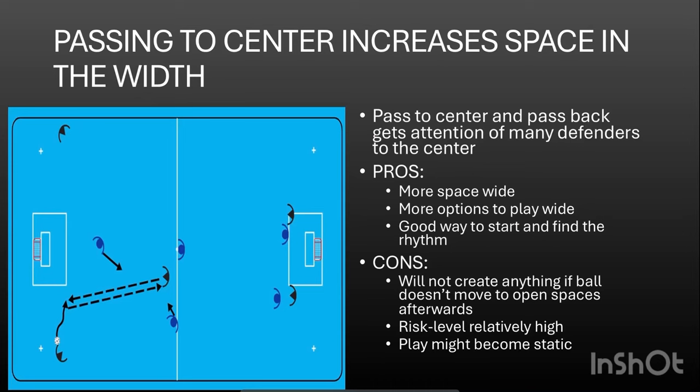The last video ended with a part where we were discussing different ways to manipulate the field and get more space into those wide side pockets, which are one of the most important spaces if you want to be successful at opening up the game. Now we will present another concept: you are able to create space in the wide pockets by passing to the center. If you pass to the center once or a couple of times, you will get the opponent's forecheck formation to squeeze in towards the center because the ball always attracts defensive players.